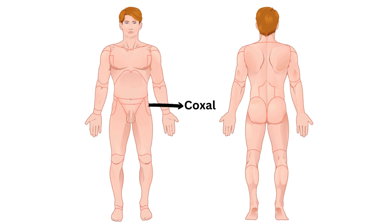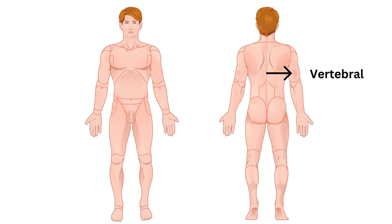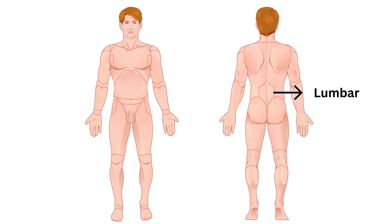21. Coxal — the hip region. 22. Dorsal — towards the back. 23. Vertebral — the region of the vertebrae. 24. Lumbar — the lower back. 25. Sacral — the region of the sacrum, the triangle bone.